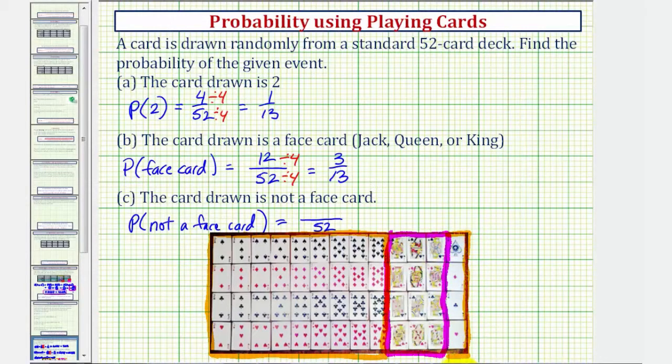If there are 52 cards and 12 of them are face cards, 52 minus 12 leaves 40 non-face cards. So the probability of not drawing a face card is 40/52.